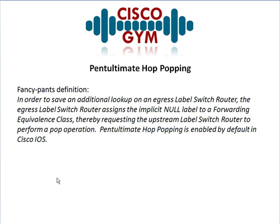Penultimate Hop Popping — let's go ahead and take a look at the fancy definition and try to stay awake while I read through this. In order to save an additional lookup on an egress label switch router, the egress label switch router assigns the implicit null label to a forwarding equivalence class, thereby requesting the upstream label switch router to perform a pop operation. Penultimate Hop Popping is enabled by default in Cisco IOS. If you read or heard that and understood it, go ahead and stop the video — because when I saw this I had no freaking clue what it was about. The definition actually made me more confused than just the term.